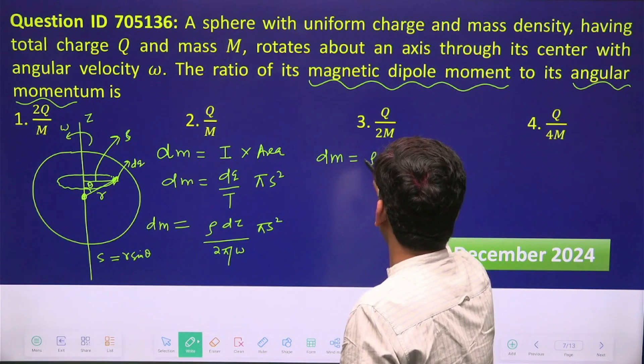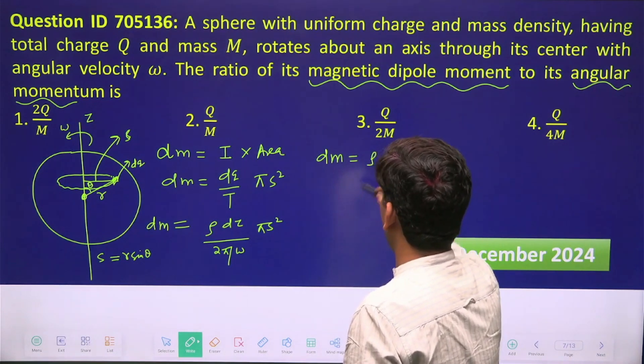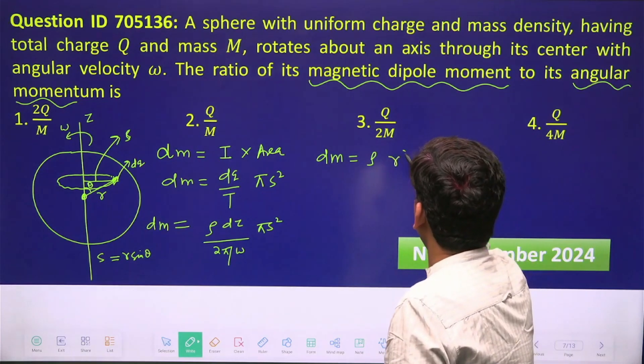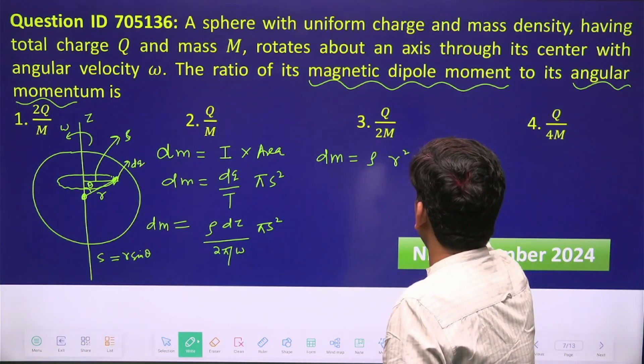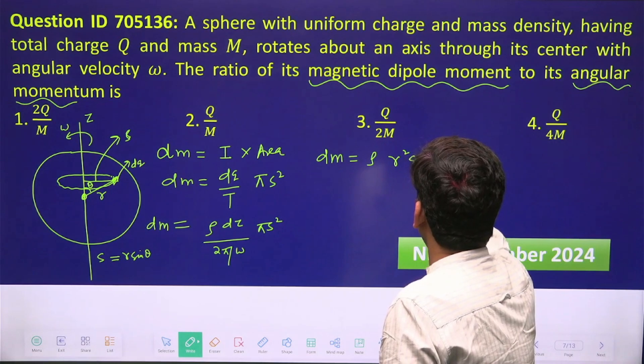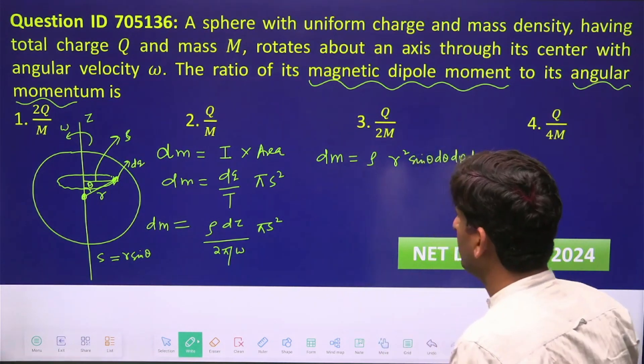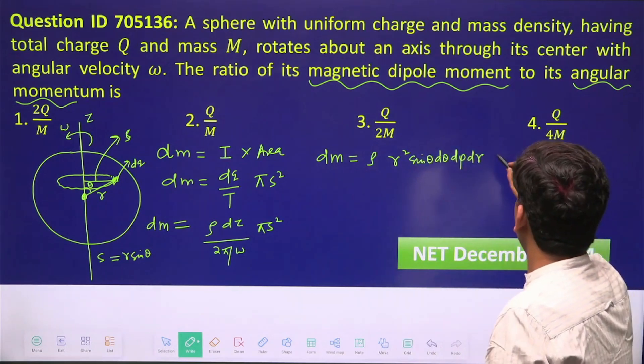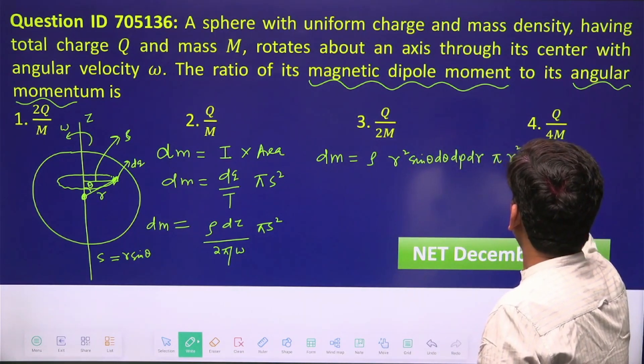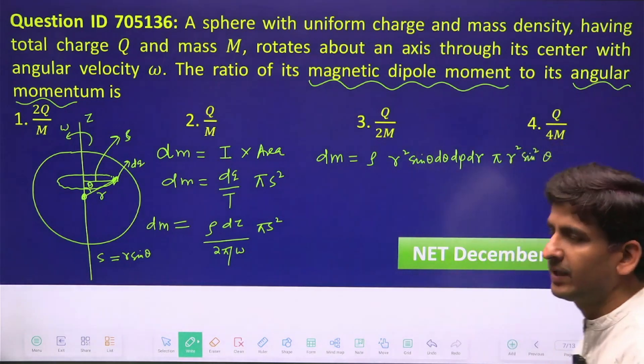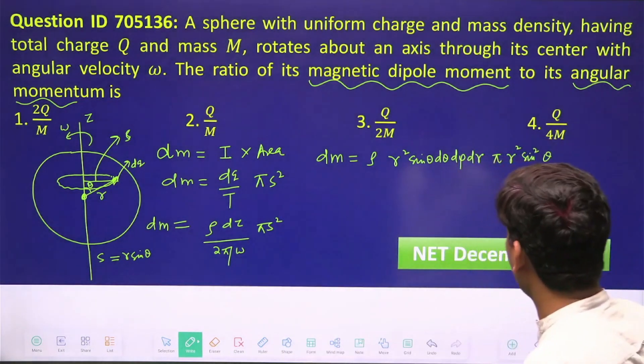Now put everything in this equation. So your dm will become ρ, which is charge density, and dτ will be r² sin θ dθ dφ dr, into π s² which is π r² sin² θ, because we have to ultimately put everything in terms of small r and θ and φ.